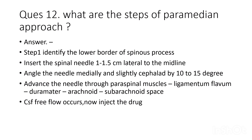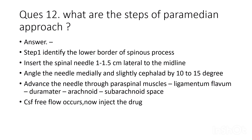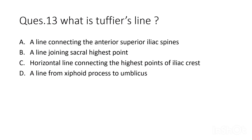Steps of the paramedian approach: Step 1 — identify the lower border of the spinous process. Step 2 — insert the spinal needle 1 to 1.5 cm lateral to the midline. Step 3 — angle the needle medially and slightly cephalad at 10 to 15 degrees. Step 4 — advance the needle through paraspinal muscles, ligamentum flavum, dura mater, arachnoid, and subarachnoid space. Final step: CSF free flow occurs, then inject the drug.